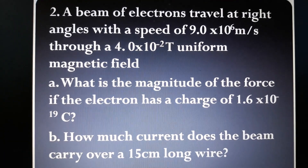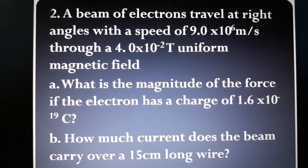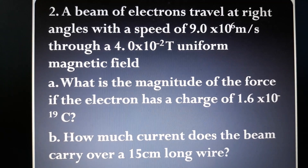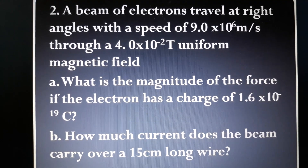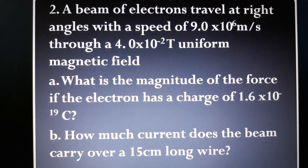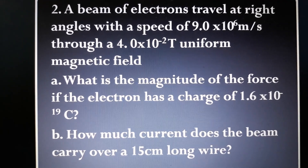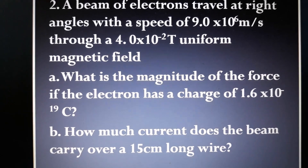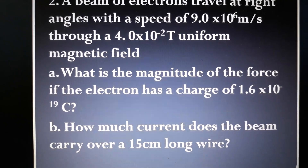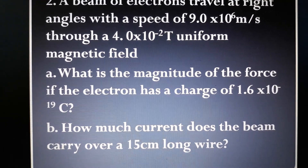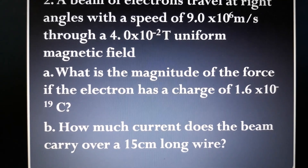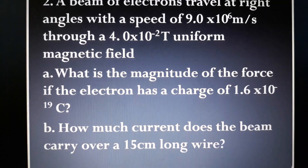Problem number 2: A beam of electrons travels at right angles with a speed of 9.0 × 10⁶ meters per second through a 4.0 × 10⁻² Tesla uniform magnetic field. Letter A: What is the magnitude of the force if the electron has a charge of 1.6 × 10⁻¹⁹ coulombs? Letter B: How much current does the beam carry over a 15-centimeter long wire?